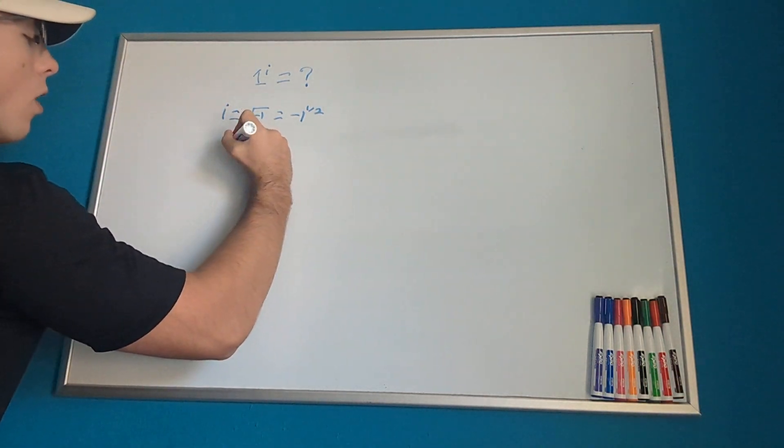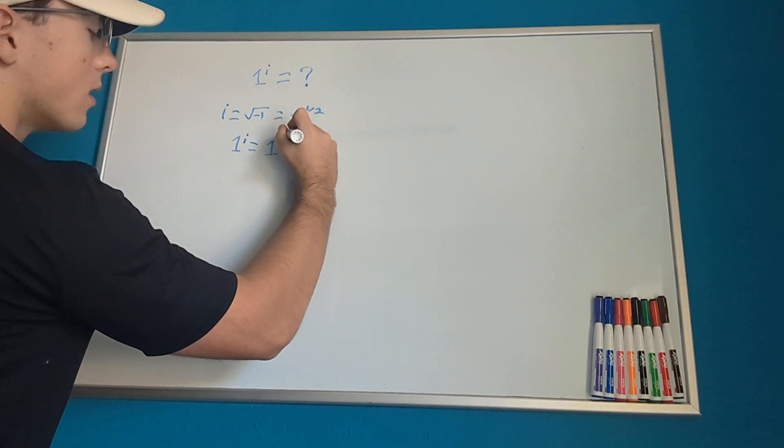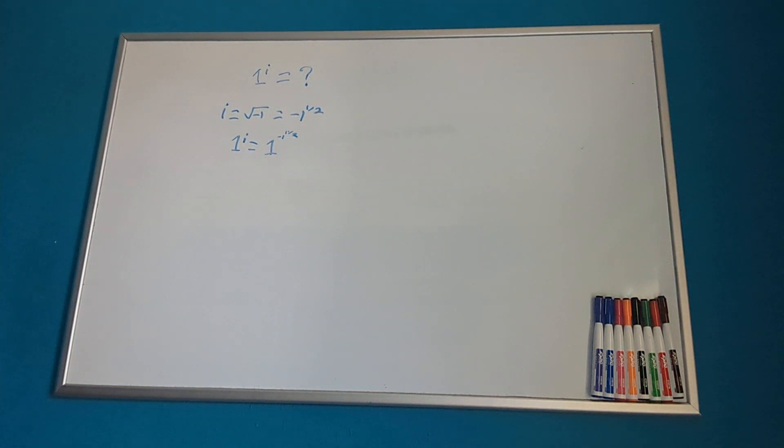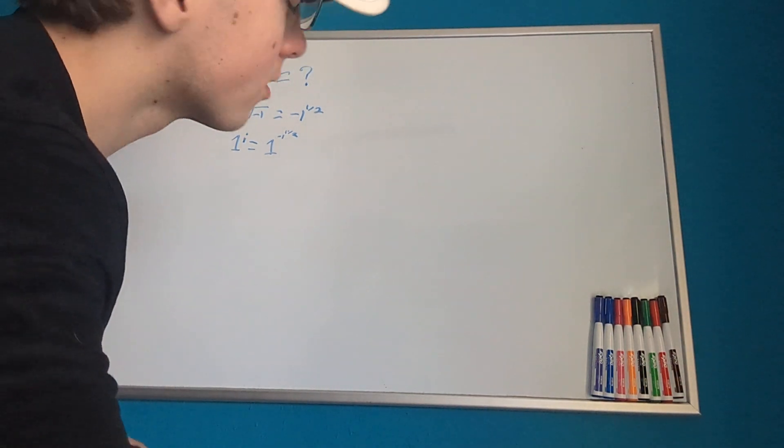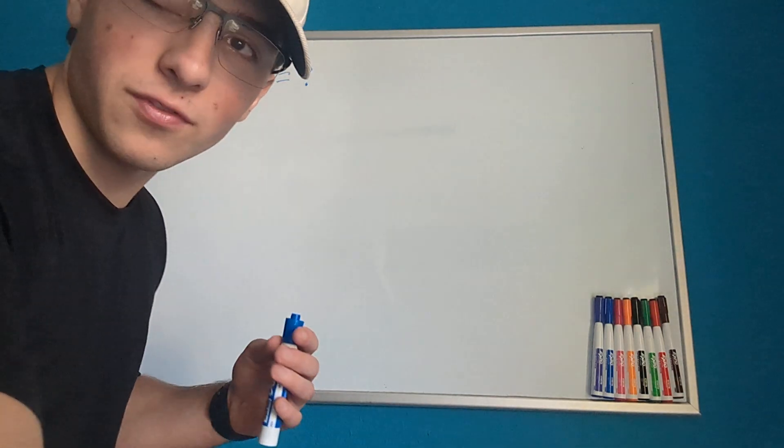So 1 to the power i equals 1 to the negative 1 to the power of 1 divided by 2. Well, we haven't made any progress here. We can't really do anything with this, so we're going to stop here and let's take a different approach to see if we can figure this out.